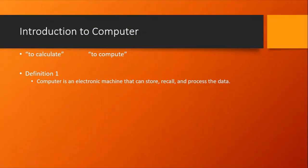What it can do: it can store the data, it can recall the data, and it processes the data. Means, if we provide certain input to the computer, based upon our input, it can access and store that data and try to calculate certain tasks or perform certain processes on the data. So the first definition would be: a computer is an electronic machine or an electronic device that can store, recall and process the data.